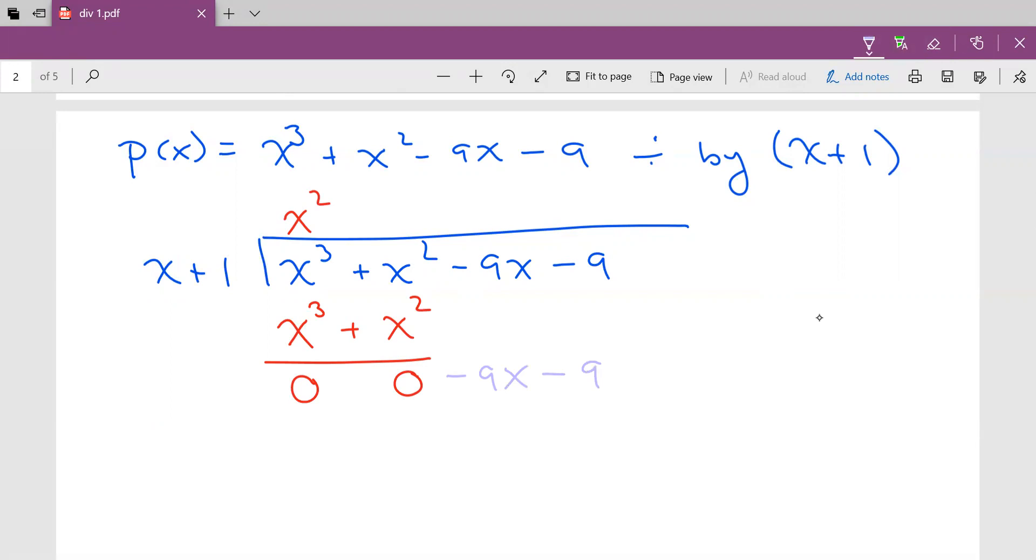So I say to myself, what do I multiply x by to get -9x? Perfect. I'm going to multiply it by -9. And now we do the multiplication. So we say -9 times x is -9x, -9 times 1 is -9. And we subtract. And guess what we are left with? 0, 0. That's our remainder.